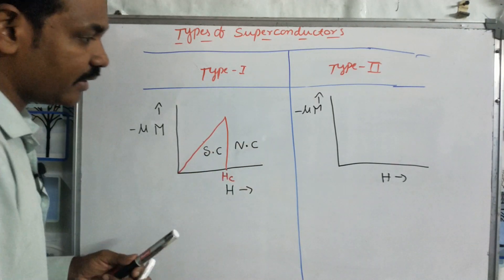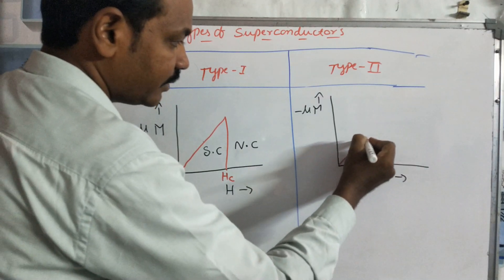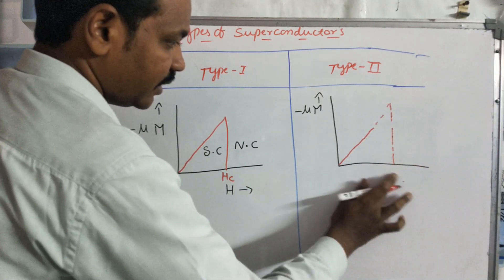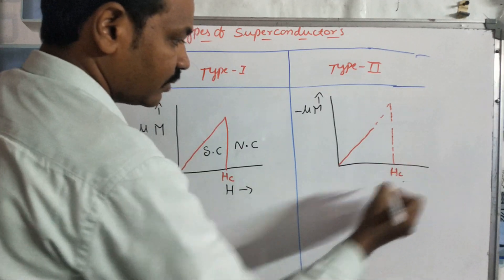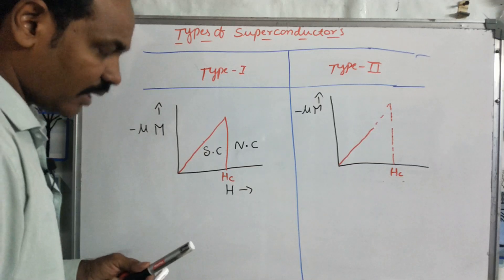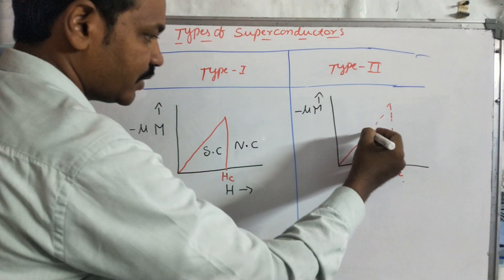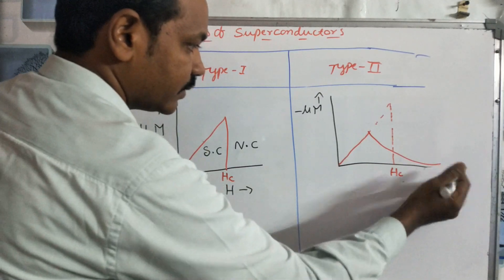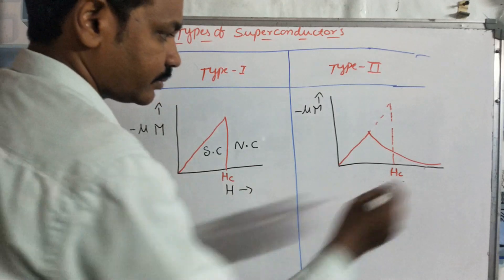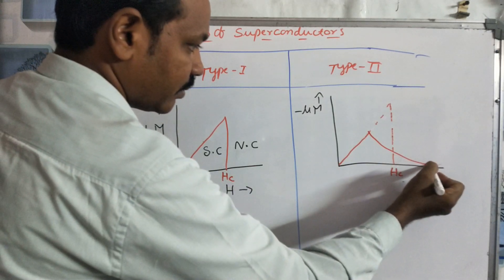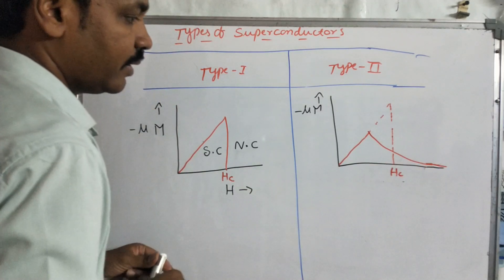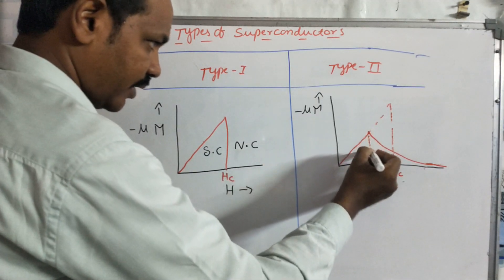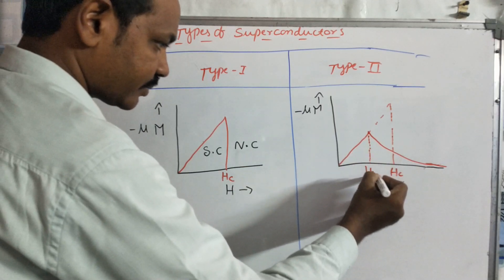Above the critical field Hc, the material shows normal conductor behavior. So the transition point on the graph is Hc. Before Hc it is superconducting; after Hc it is a normal conductor. The critical field Hc1 marks the first transition point.